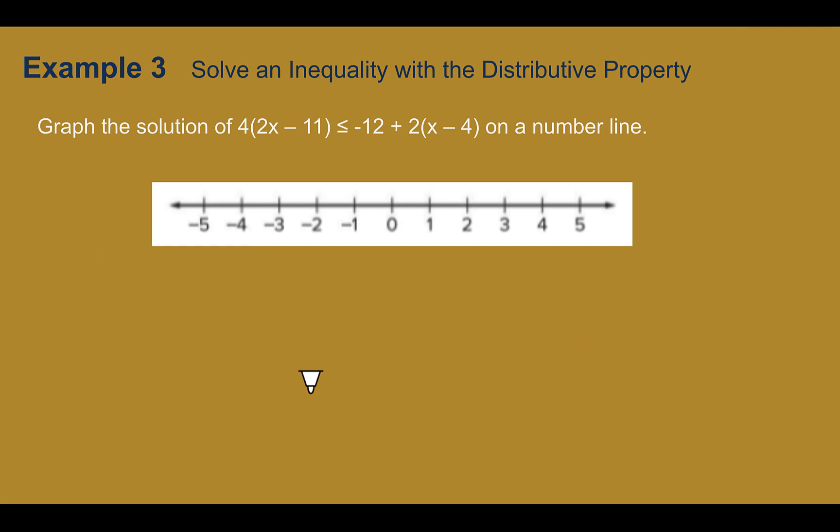Now if I need to graph it, so I said that x was less than or equal to 4. So my closed circle, again I can see the symbol right there, it doesn't change. Closed circle at 4 and I want the numbers that are less so my arrow would go to the left.